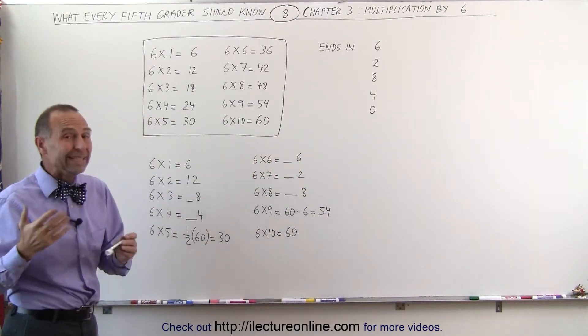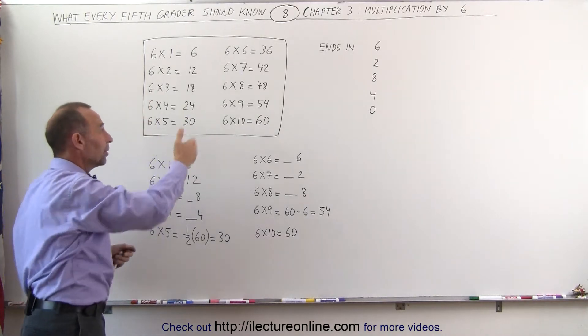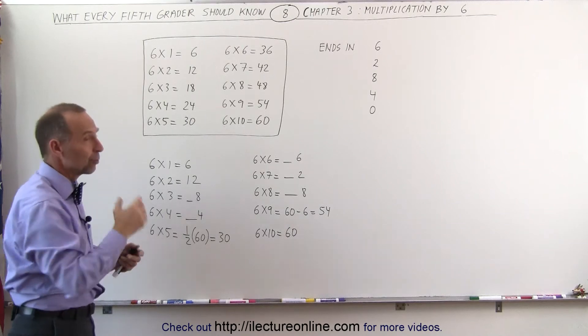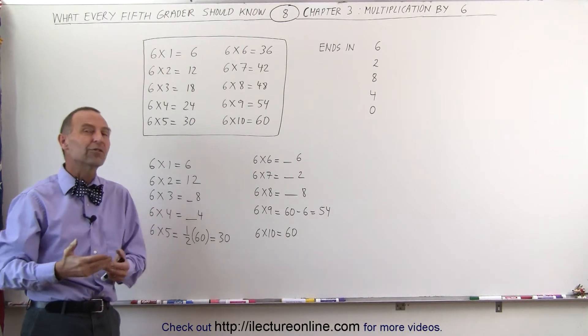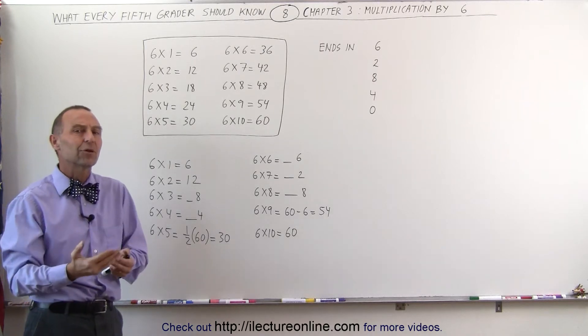Now we still need to memorize them by rote memorization. We still need to go through the table and try to memorize all the numbers one by one. 6 times 1 is 6, 6 times 2 is 12, 6 times 3 is 18, 6 times 4 is 24, 6 times 5 is 30.